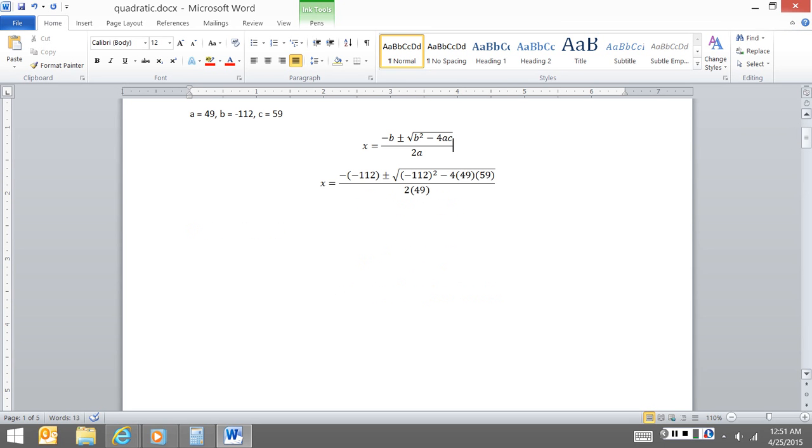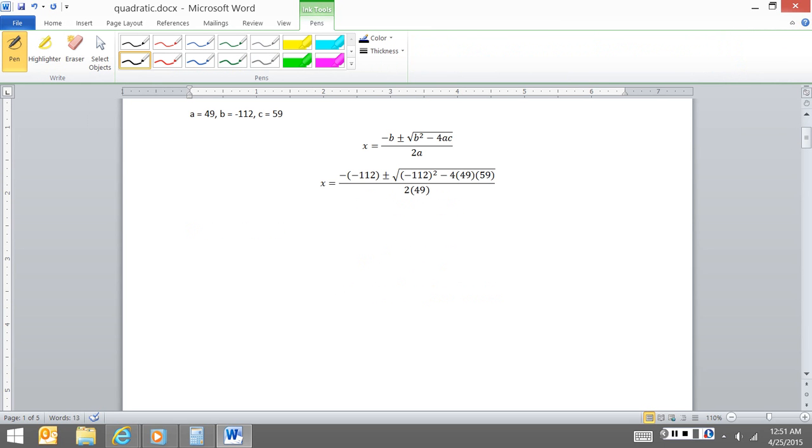Now, this equation obviously is not for the faint-hearted. It is a big equation. There are lots of pieces here. So where do you start? Well, you start under the radical. So I'm going to do negative 112 squared.